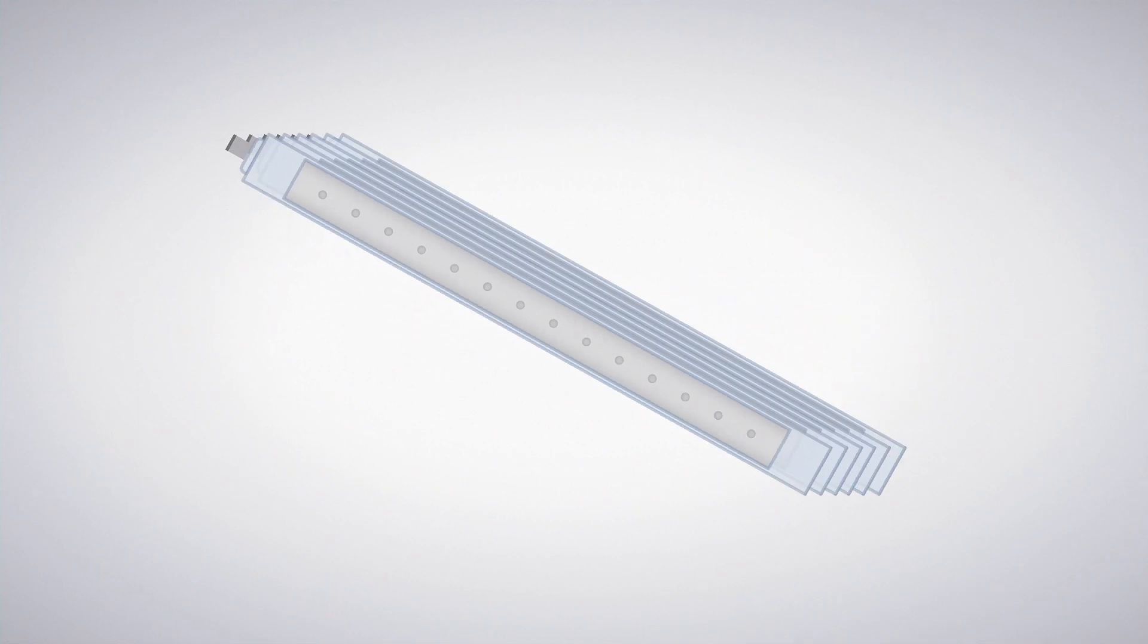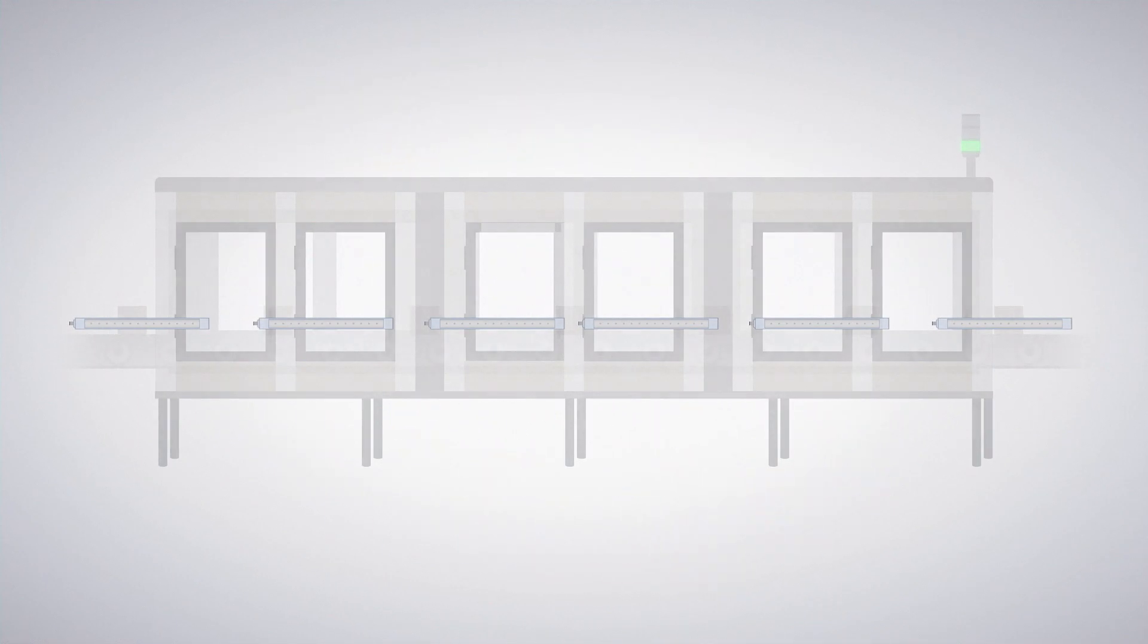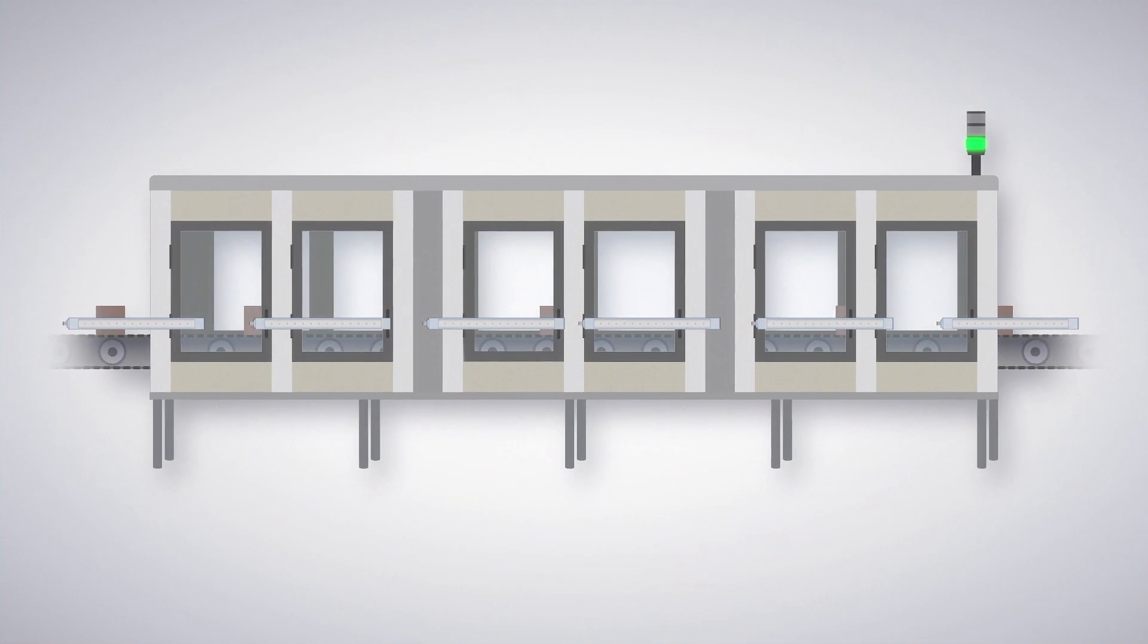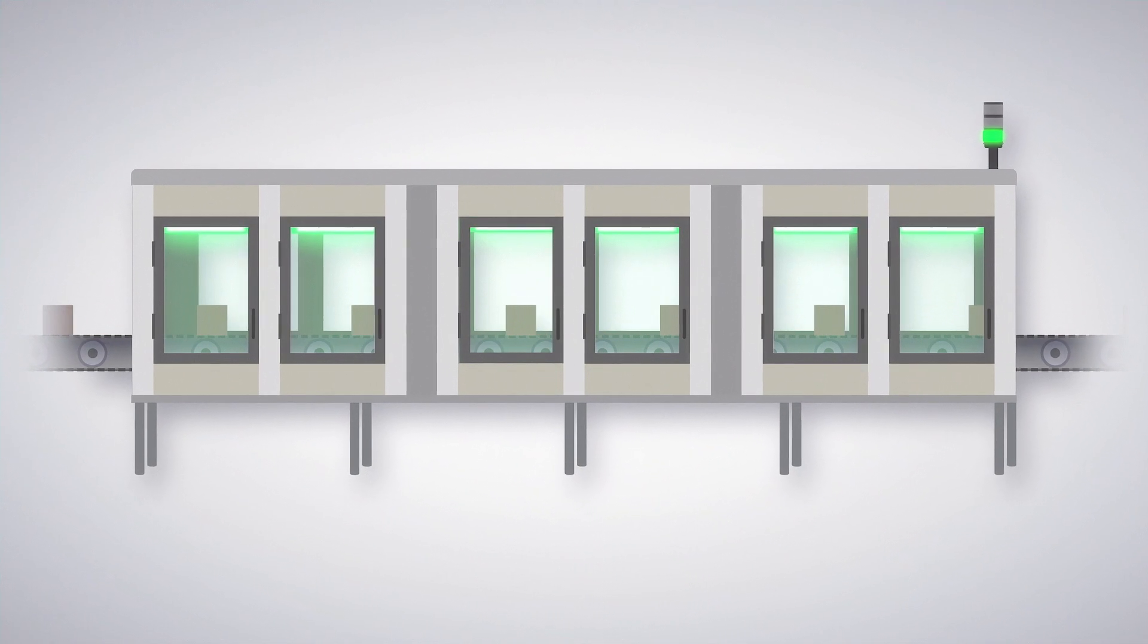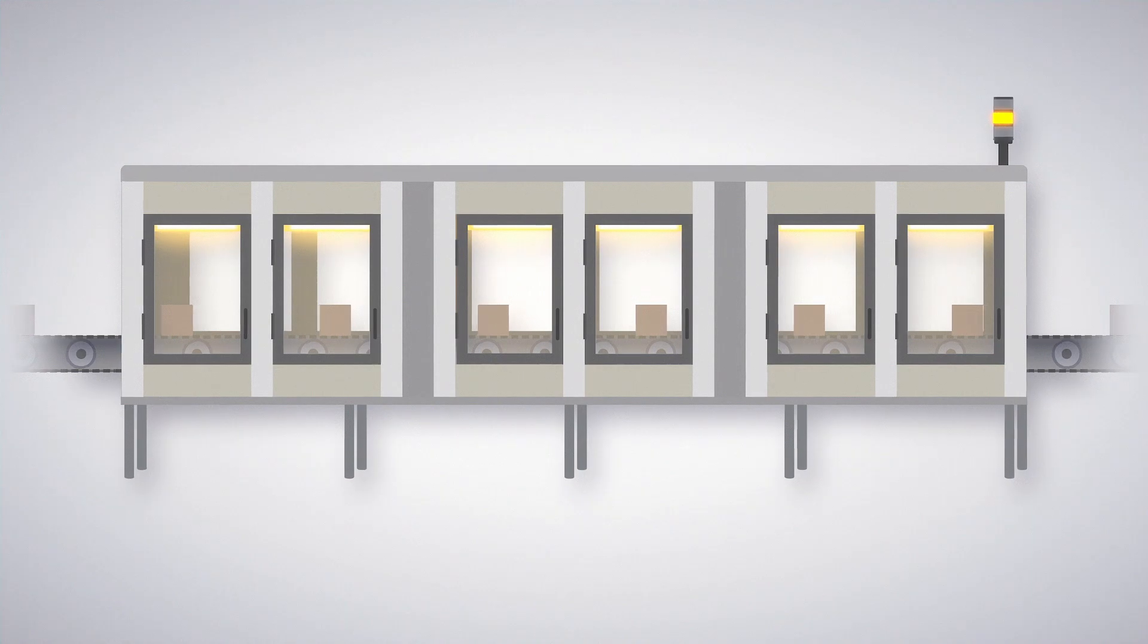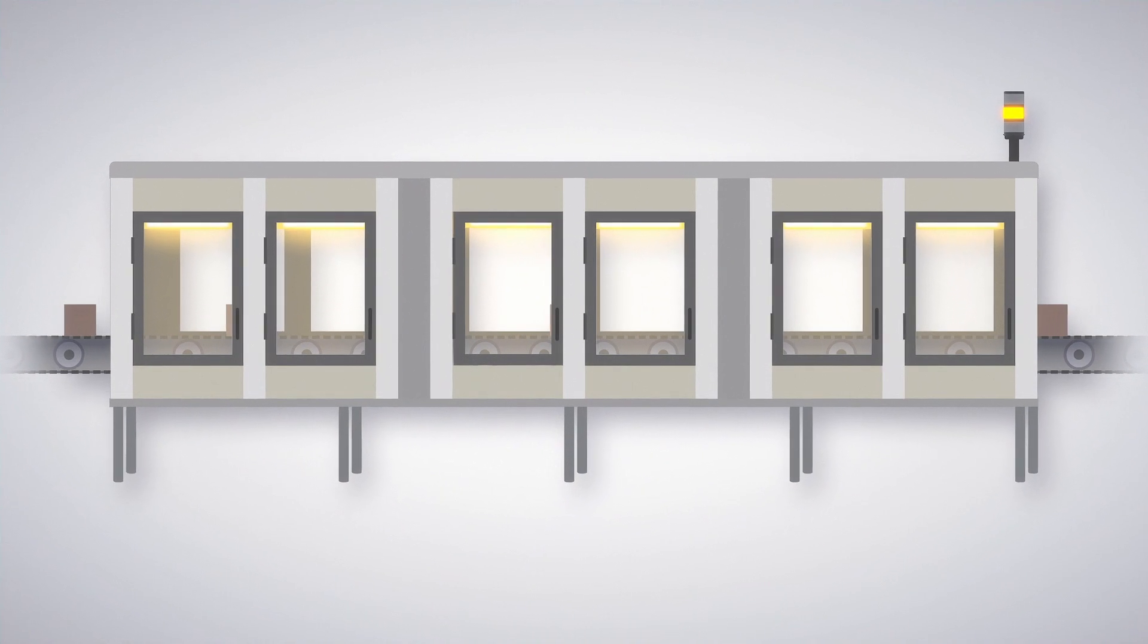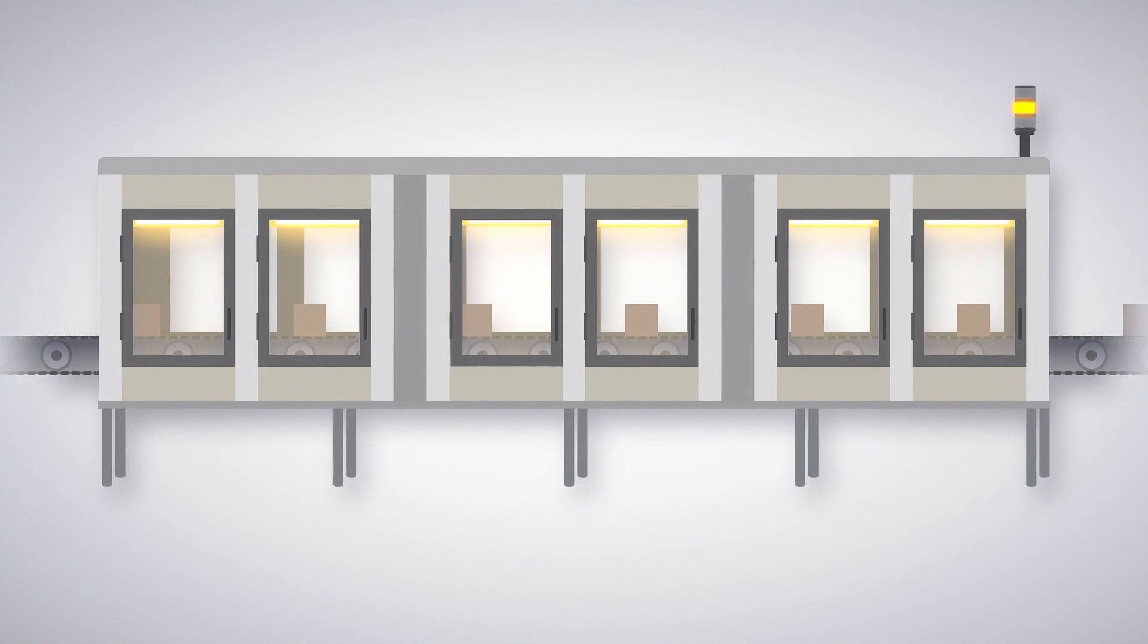EasyStatus lights perform multiple functions on large machines. First, use them to indicate production efficiency or OEE in real time. Green indicates production is on pace to meet goals, while yellow cautions that production is behind schedule and action is required to get back on target.